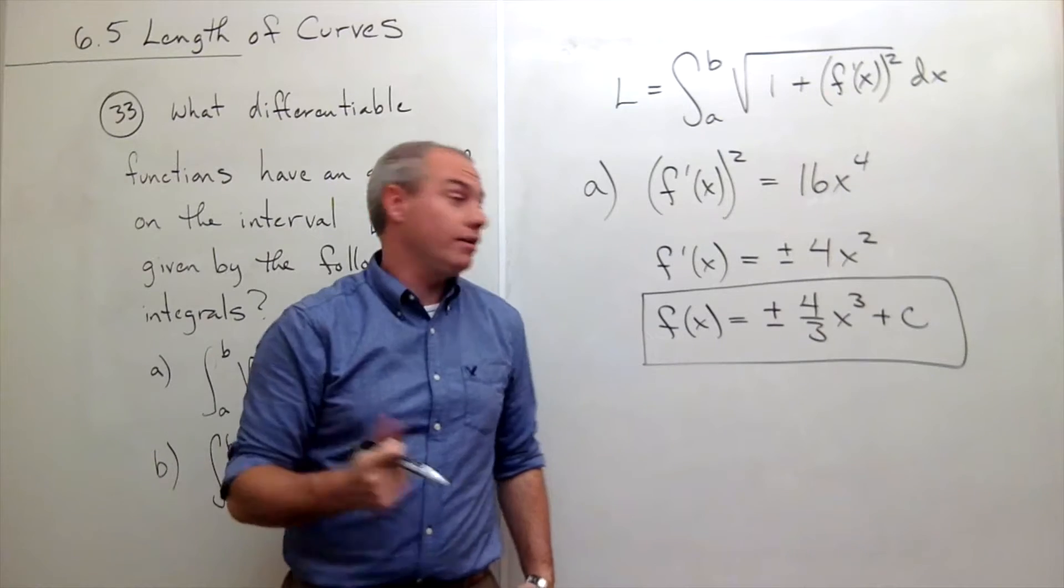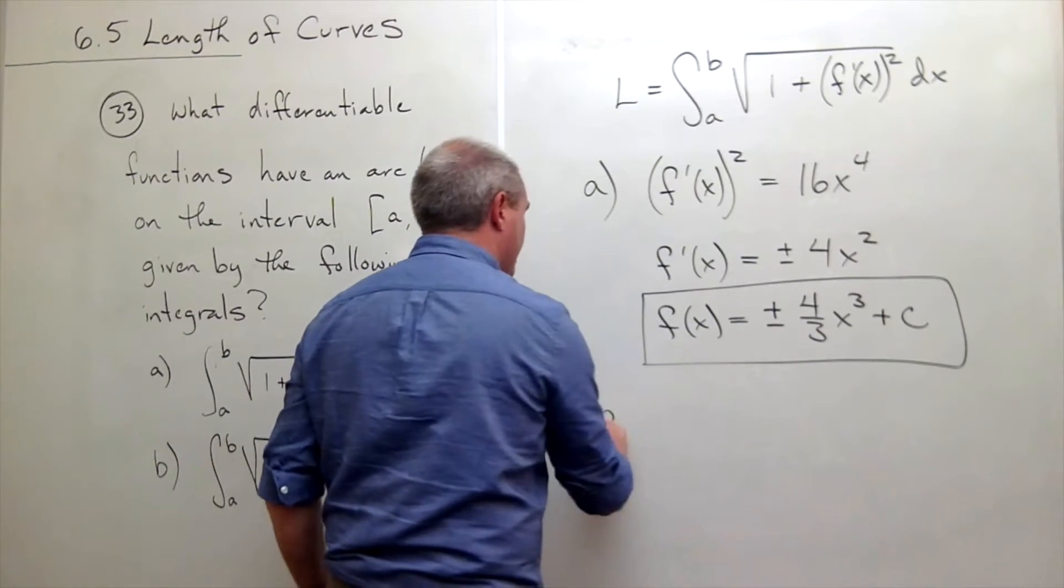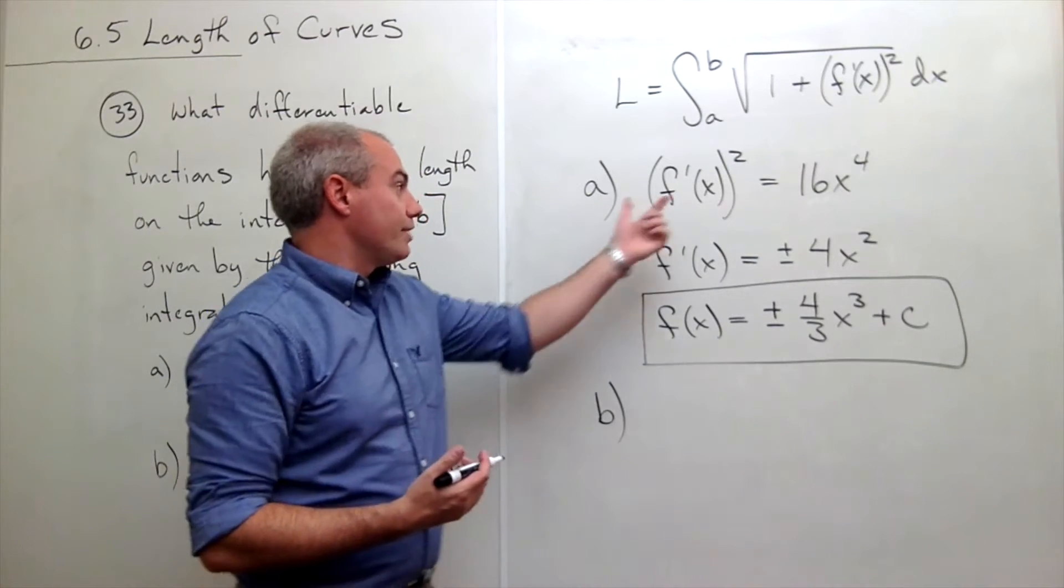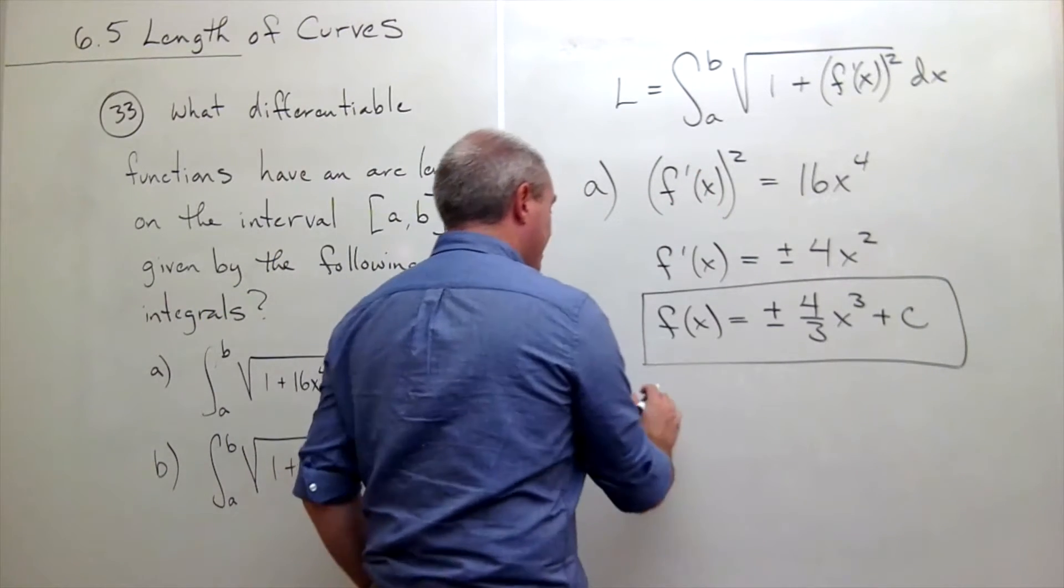Now let's do part b. In part b, I'm doing the exact same thing, I just have a different derivative squared.